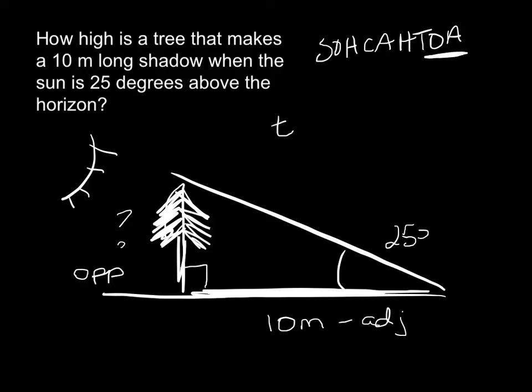So the tangent of 25 degrees is equal to the opposite, the height of the tree, over the adjacent, or the length, which is 10 meters. And so then solving, make sure your calculator is in degrees. We're going to do all of our math in degrees. So we go 10 times the tangent of 25 degrees, and we find out that the height of our tree is 4.66 meters.